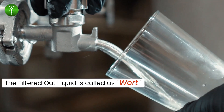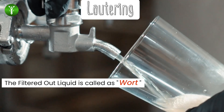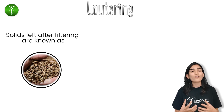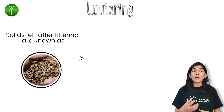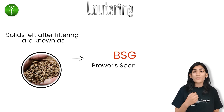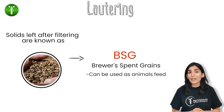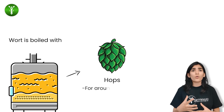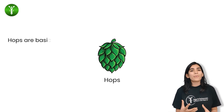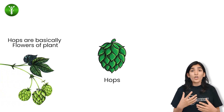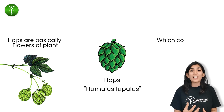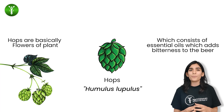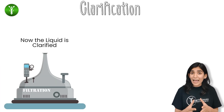After the mashing process, a liquid is filtered out and that liquid is named as wort. The filtration process is known as lautering. The solids left after filtering the liquid in the tank are known as BSG, or brewer's spent grains, and can be used as animal feed. This wort is then boiled with hops for around two to three hours.